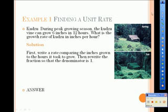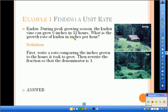Let's try an example of finding a unit rate. This example is about kudzu. It says during peak growing season the kudzu vine can grow 6 inches in 12 hours. What is the growth rate of kudzu in inches per hour? First we're going to write the rate comparing the inches grown to the hours it took to grow. I highlighted it in my problem because inches comes first and hours come second. So when we write our ratio we are going to compare inches to hours. Next we're going to go back to our problem and find the numbers that correspond with each unit. So we have 6 inches and 12 hours. So I'm going to plug in a 6 in the inches position and a 12 in the hours position.